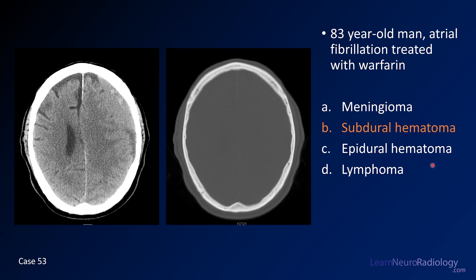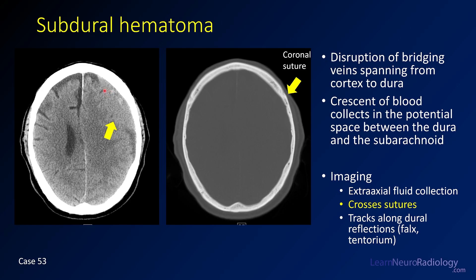The answer is subdural hematoma. There is an extra-axial hematoma with a slight lens shape like an epidural hematoma, but it wraps around and continues like a crescent. It also crosses the expected region of the coronal suture with no fracture — it's very uncommon to have epidural hematomas without a fracture. Subdurals are much more common, and this case illustrates the variable appearance of subdural hematomas and their overlap with epidural hematomas.